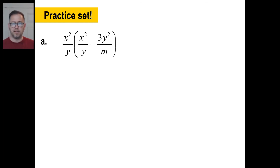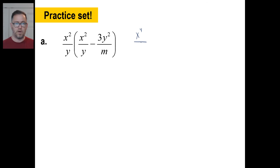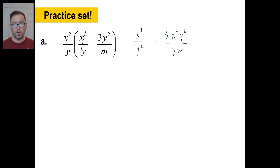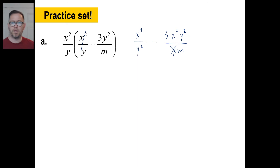We have problems A through F. Go ahead and give A a whirl, then come back. X squared times X squared is X to the fourth. Y times Y is Y squared. Done. Then a minus sign — three times one is three, so we get three X squared Y squared. Y times M is YM. The only thing left to do is cancel: Y squared divided by Y to the first means one Y cancels, leaving just Y. So Y squared becomes Y to the first power.